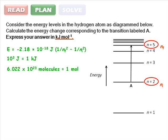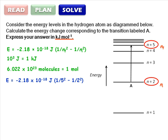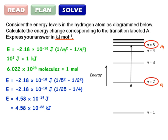To solve the problem, simply substitute 2 in for the n initial and 5 for n final. That becomes energy equals negative 2.18 times 10 to the negative 18 joules times 1 over 25 minus 1 over 4, which equals 4.58 times 10 to the negative 19 joules, or 4.58 times 10 to the negative 22 kilojoules.